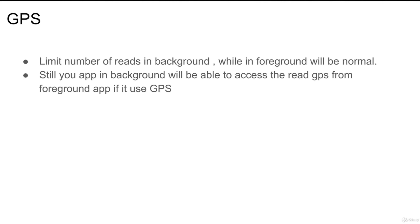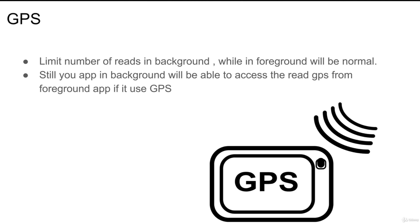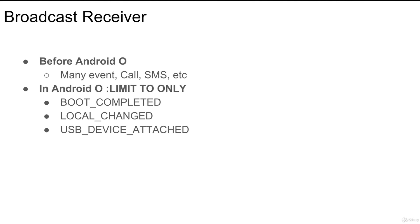So here you need to think: if you are targeting devices before Android O, you can still read GPS an unlimited number of times. If you are targeting Android O, you need to know you have a limited number of GPS accesses when your application goes to background. Keep this in mind when developing specific applications. Now there is also something called broadcast receivers — as we talked about earlier, a broadcast receiver is something that happens in the background that you want to receive, like an incoming call, SMS, or other system events. If you want to target devices before Android O, you can still use most system events like calls, SMS, and many others.